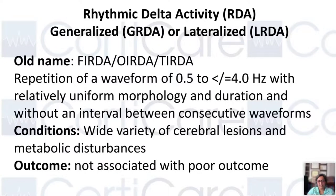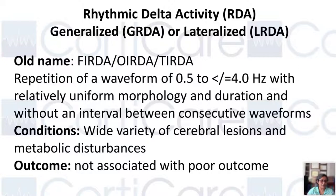Rhythmic delta activity can be generalized or lateralized. The old names FURDA, ORDA, and TERDA are still used, but according to new terminology, GRDA is called frontally predominant, temporally predominant, or occipitally predominant GRDA. It is less than or equal to 4 hertz of delta with uniform morphology — do not confuse it with polyphasic delta. This pattern is usually seen in patients with a wide variety of cerebral lesions and metabolic disturbances, and it is not associated with poor outcome.